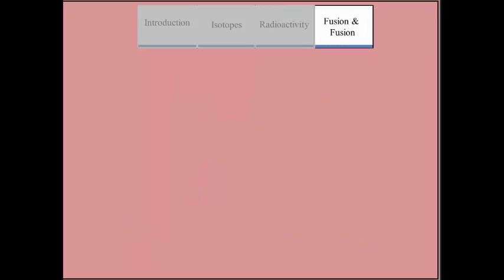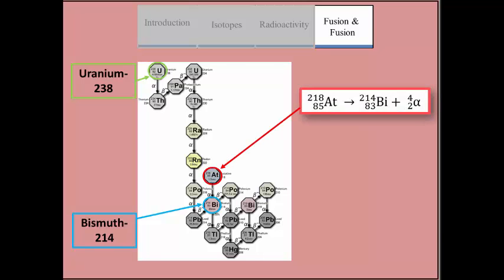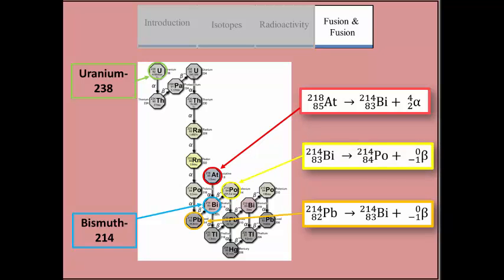Bismuth-214 is found on the decay chain of uranium-238. Bismuth-214 occurs within the radioactive disintegration chains of astatine and lead. It also produces polonium-214 via beta emission.